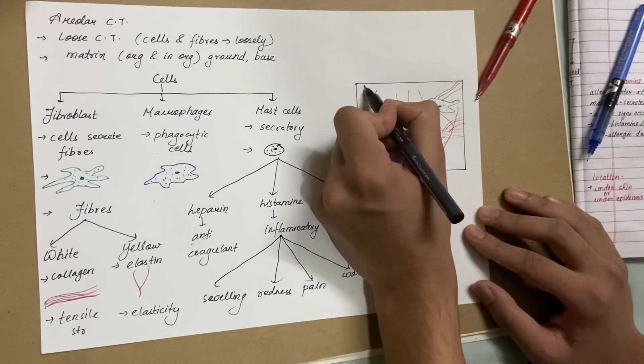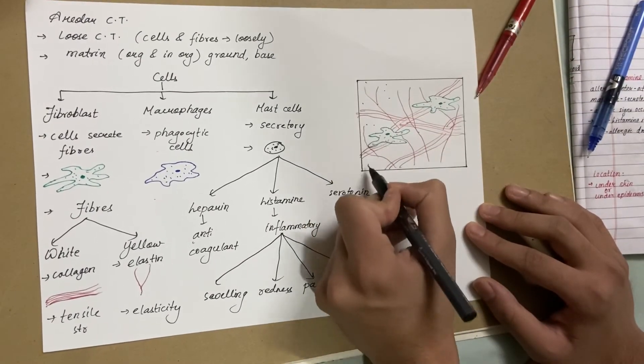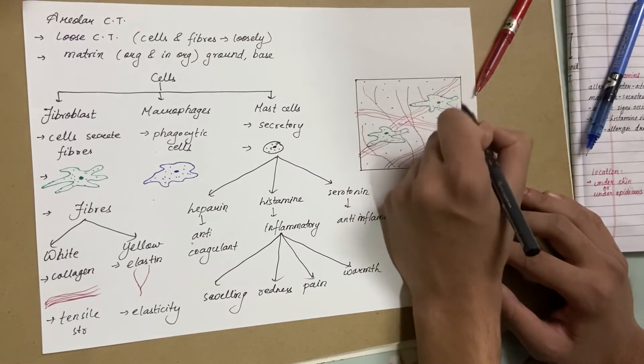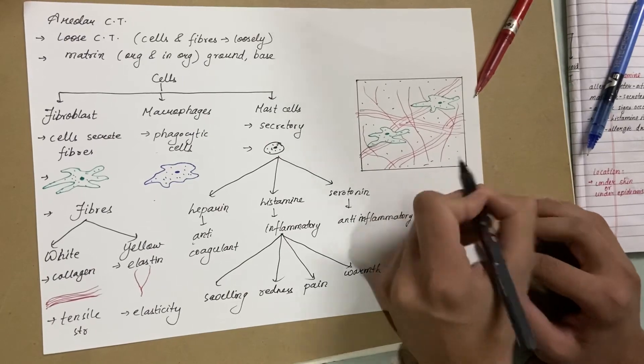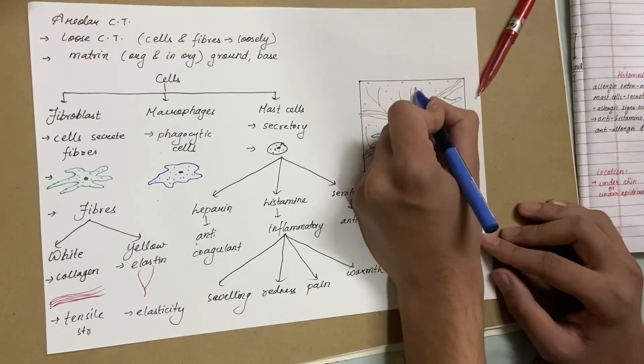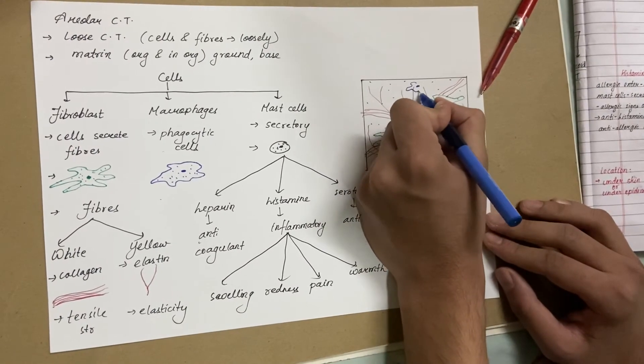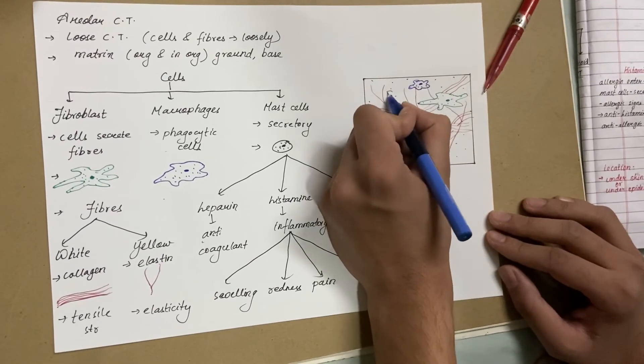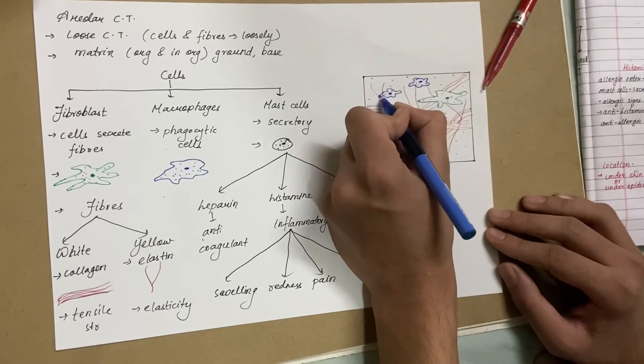We have the ground or base which is contained of matrix that contains organic and inorganic substances. Then we also have the irregular or amoeba-like macrophages that do phagocytosis and attack anything that our body can't recognize.